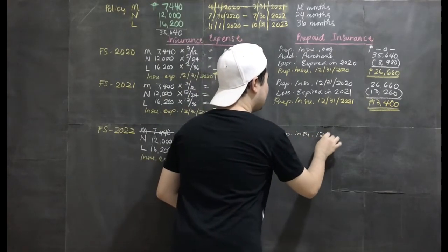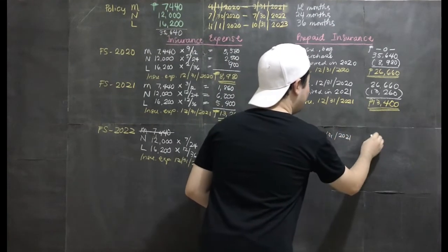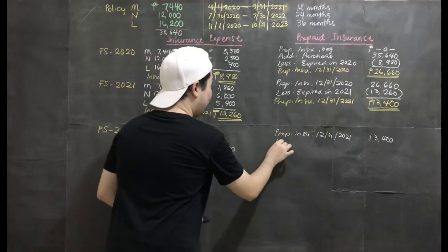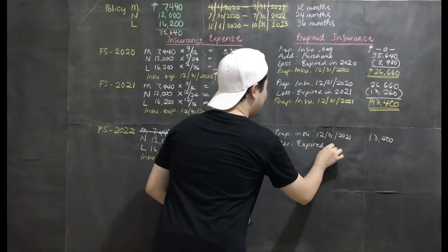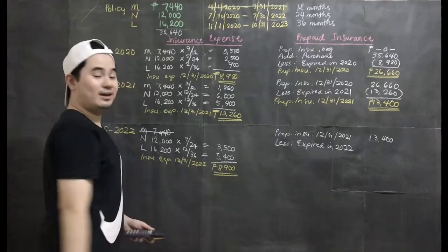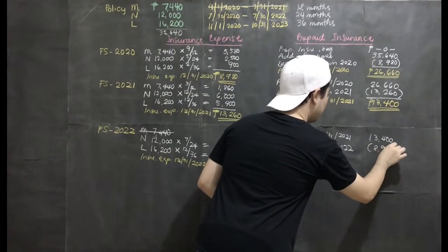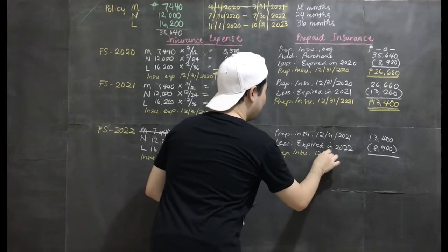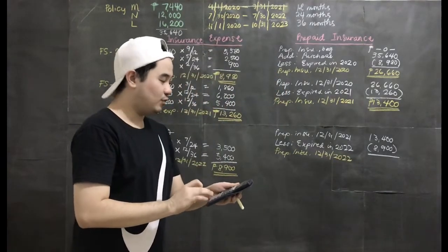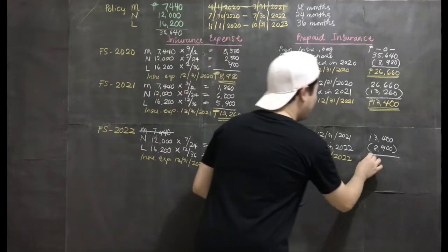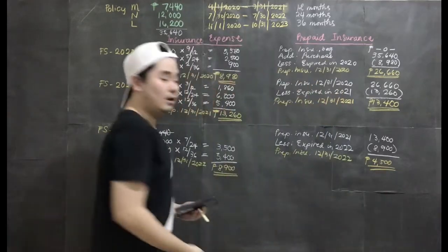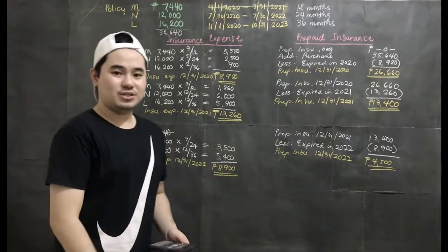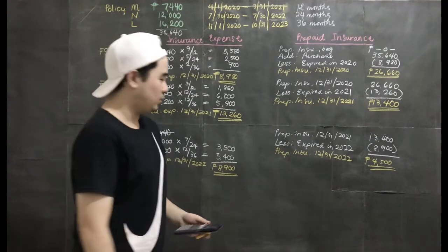Prepaid insurance from last year — December 31, 2021 — is 13,400. No new purchases. Deduct amount expired in 2022: 8,900. Prepaid insurance on December 31, 2022: 13,400 minus 8,900 equals 4,500. Insurance expense on December 31, 2022 is 8,900. Remaining balance of prepaid insurance on December 31, 2022 is 4,500.